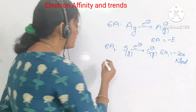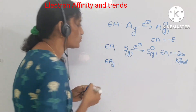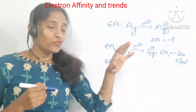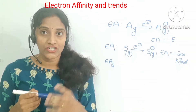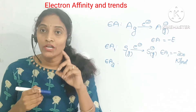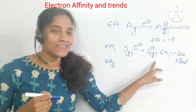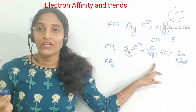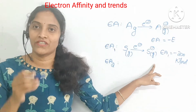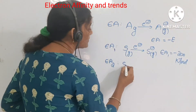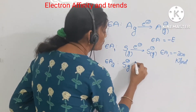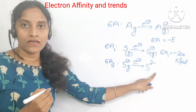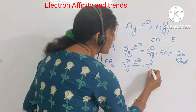Coming to Ea2 — second electron affinity. Ea2 is the energy change that happens when we are going to add one mole of electrons to one mole of singly negatively charged gaseous ions at standard conditions. Then it will form a doubly negatively charged gaseous ion. For example, S minus gaseous ion — I am going to add one more electron so that it will become S²⁻, a gaseous ion.